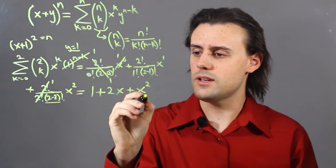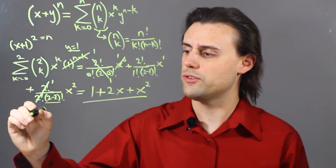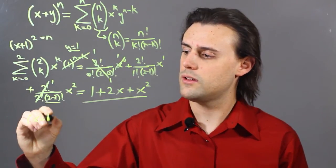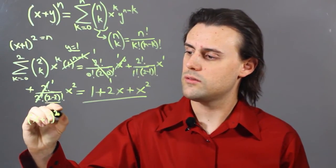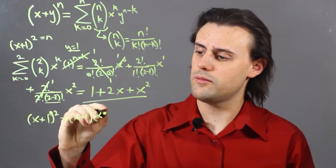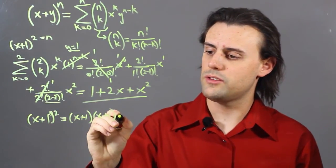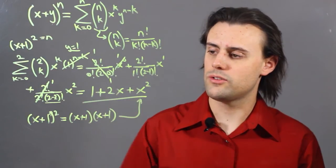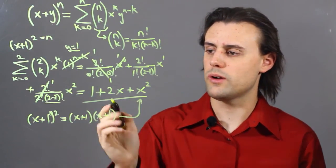And we see that this is indeed what x plus 1 squared is equal to. It's equal to x plus 1 times x plus 1, and this product turns out to be x squared plus 2x plus 1.